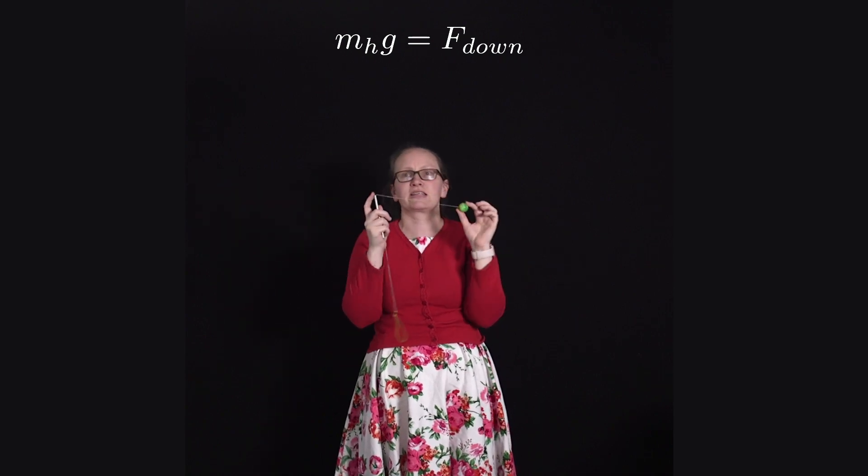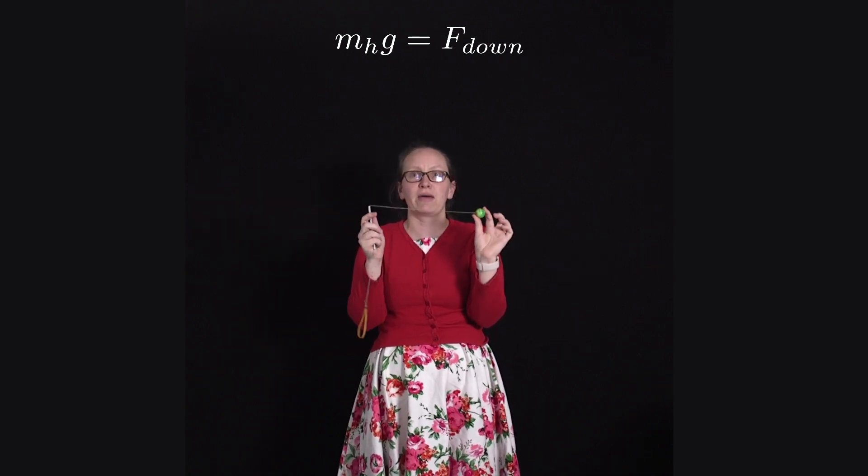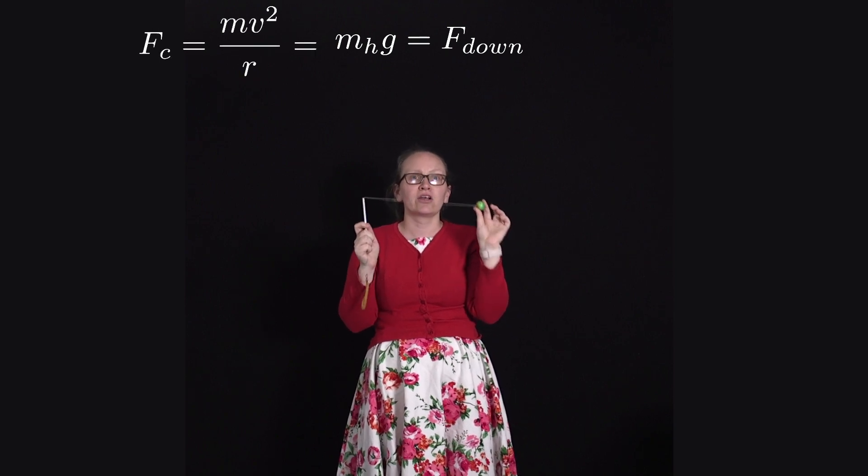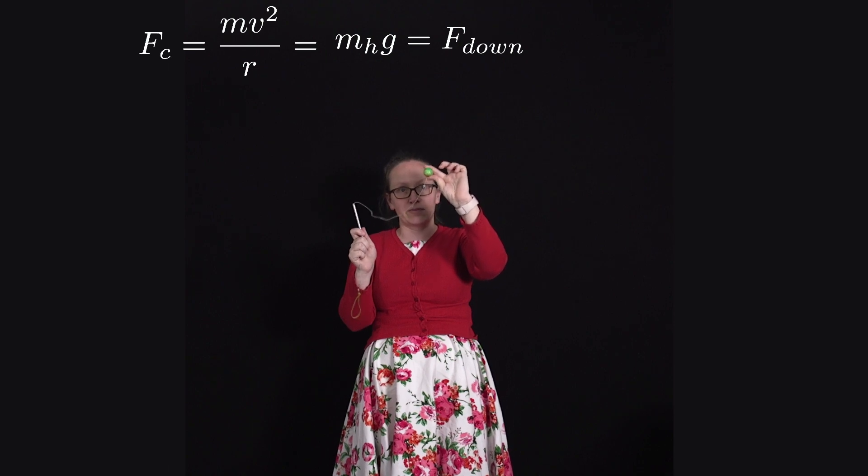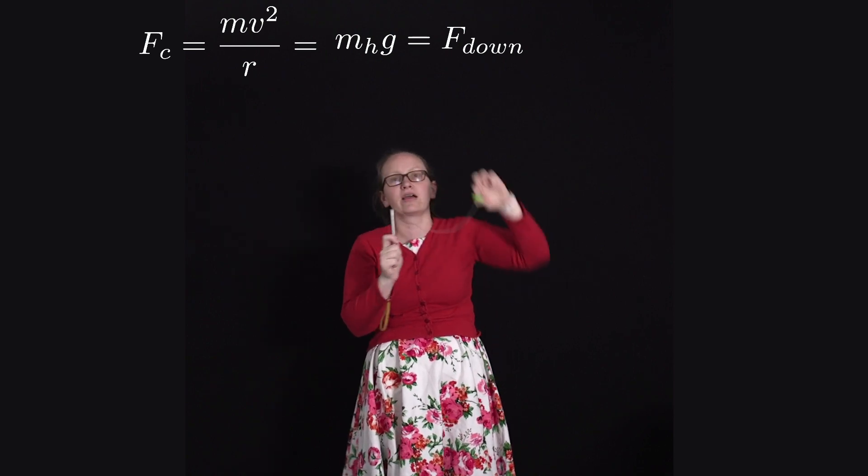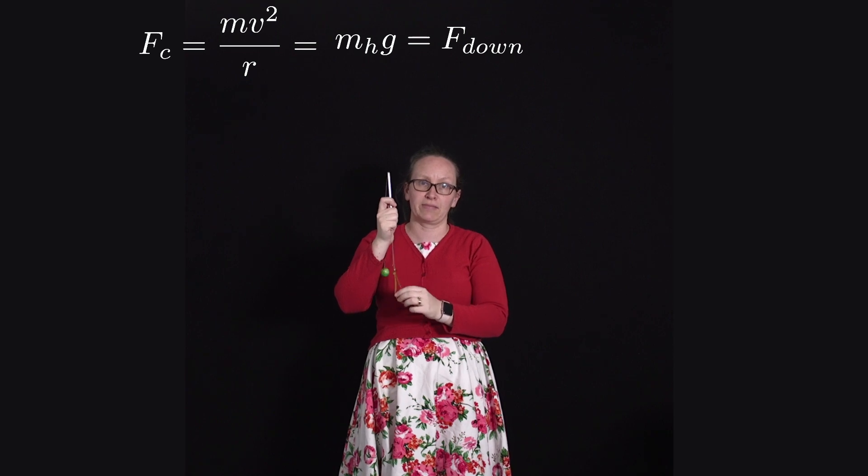So the swinging mass has a centripetal force given by mv squared on r. Note that this is a different mass because the mass in this equation is the mass that is being swung. The mass in the other equation was from the hanging mass.